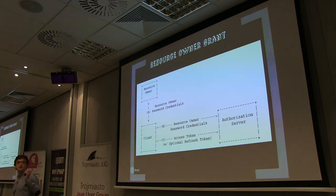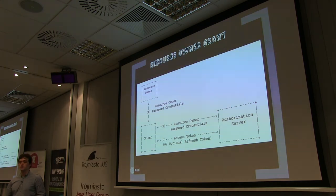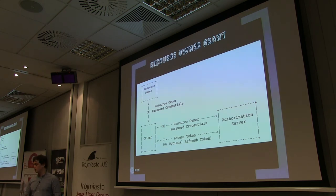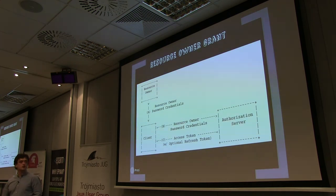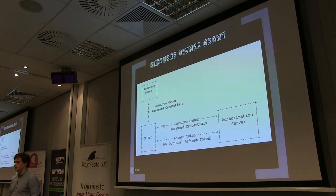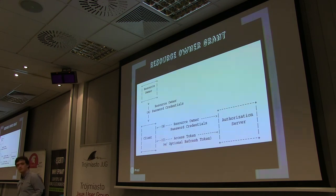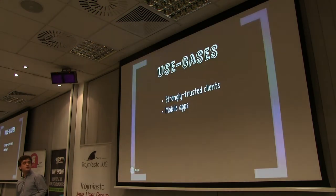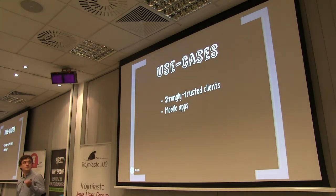An alternative for mobile clients would be the Authorization Code Flow, but that would require showing a web form inside the native mobile application, which harms user experience — which is why this flow was introduced. The client will not store user credentials; it passes them to the server, obtains the token, and works with the token from there on. Use cases: strongly trusted mobile clients and native mobile apps.